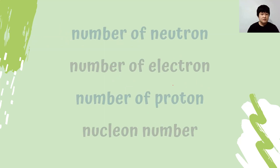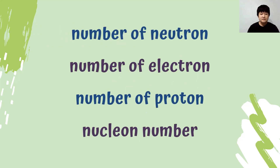Let's look into what is actually the number of neutrons, the number of electrons, the number of protons, and the nucleon number. The number of protons is also referred to as the proton number.